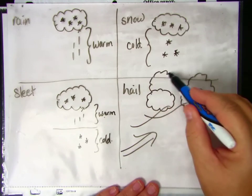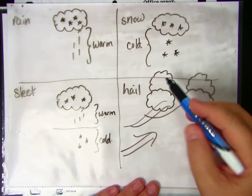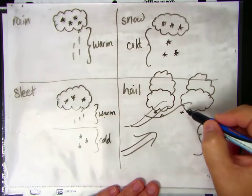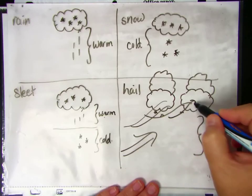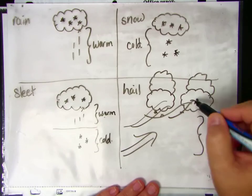And what happens is as the warm air gets pushed up into the atmosphere, the snow or the rain, whatever is falling, gets pushed back up into the cloud. And when it gets pushed back up, it gets a new layer of water on it, which freezes.